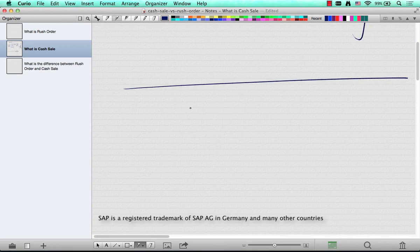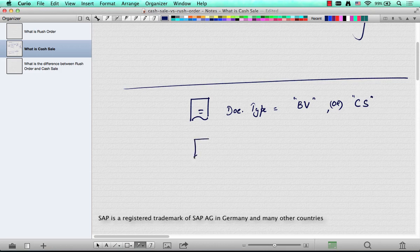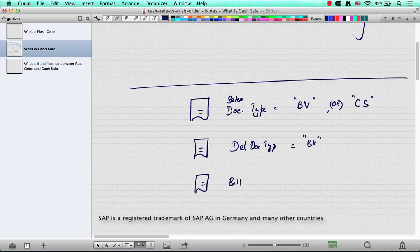So this is done in SAP by a document type. Document type is BV or CS. CS is for cash sale. The delivery document type - this is the sales document type. The delivery doc type is also BV. And the billing document type is also BV.